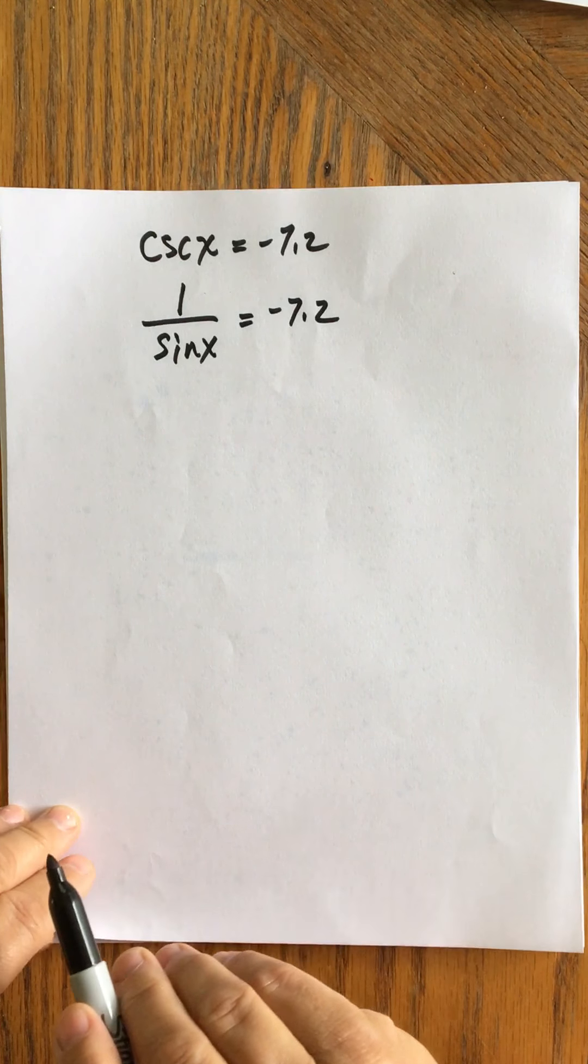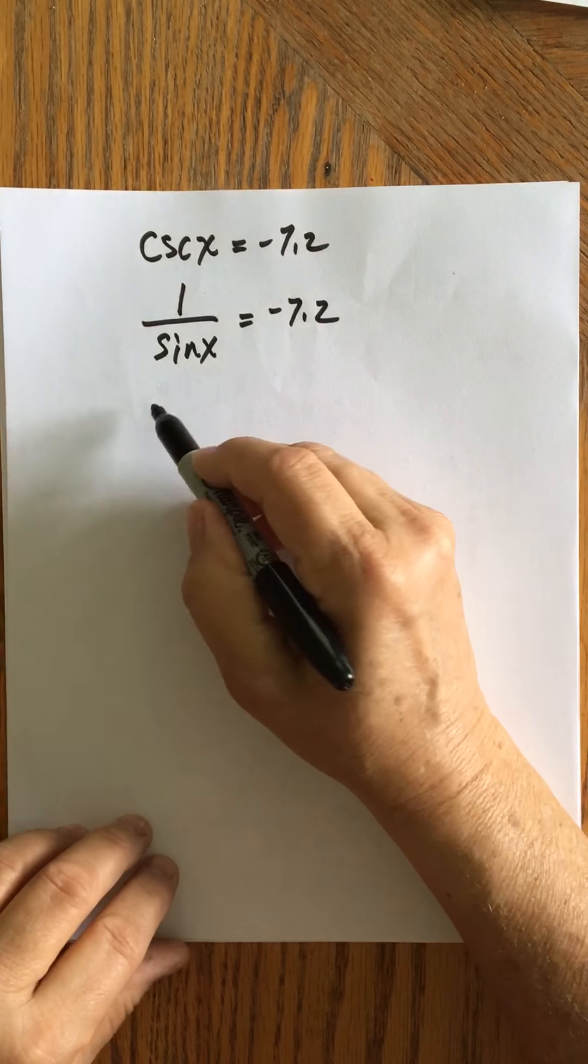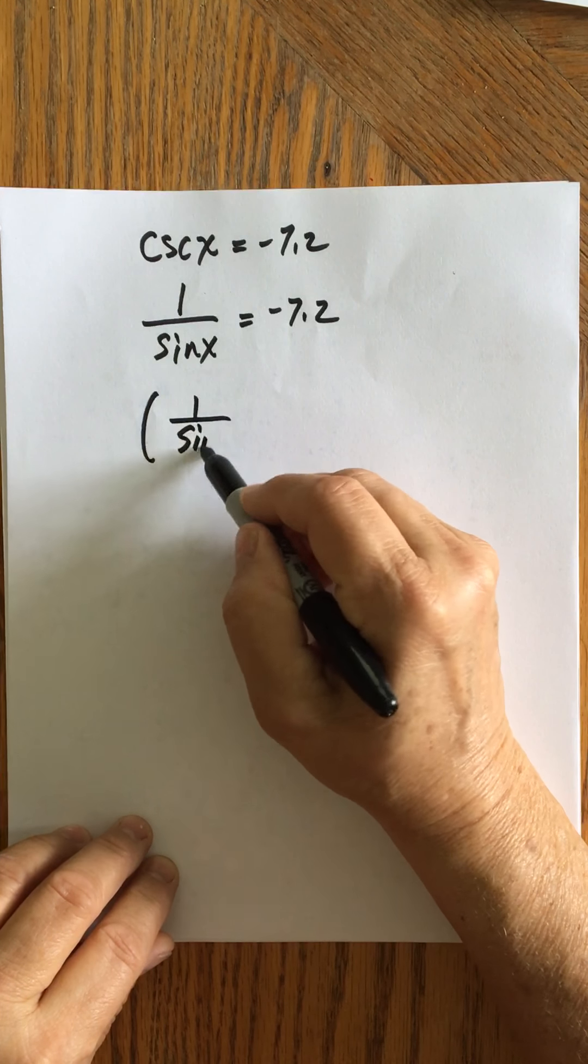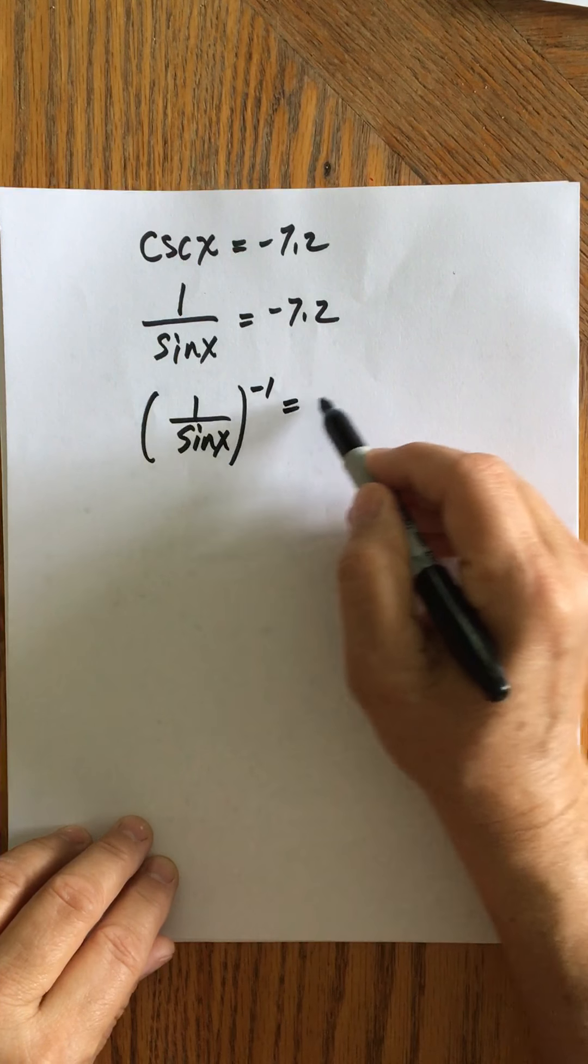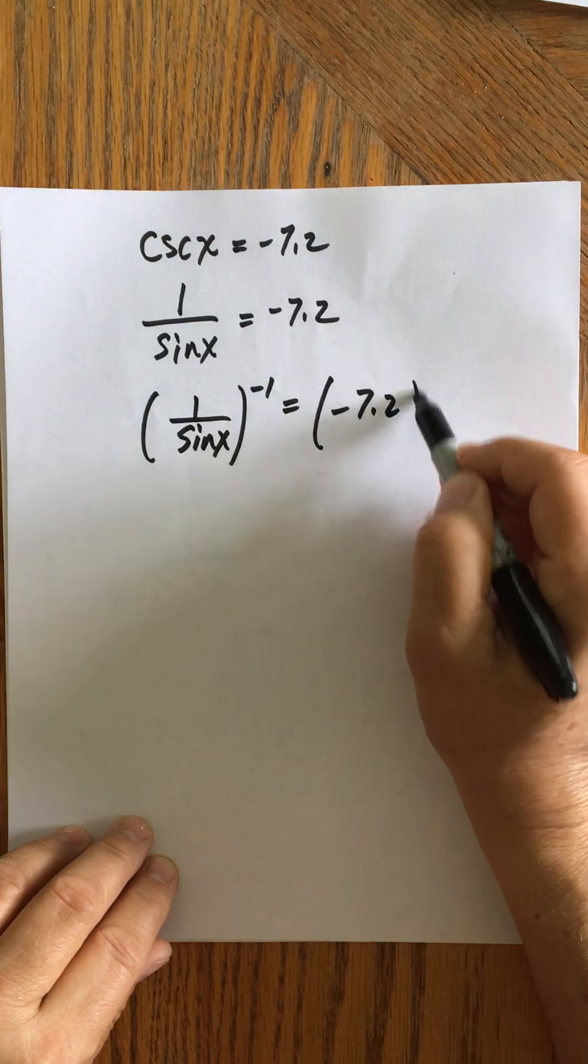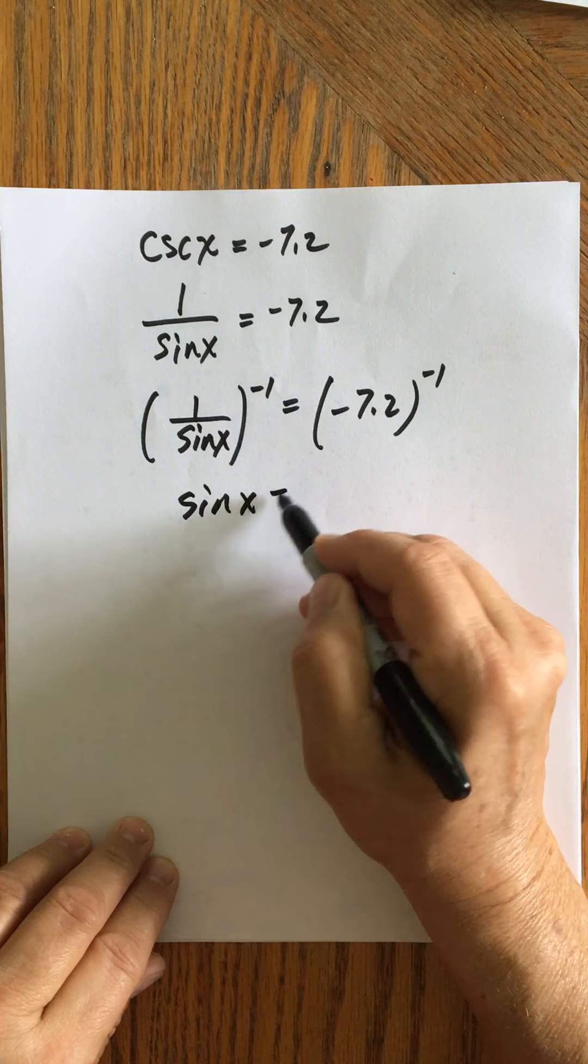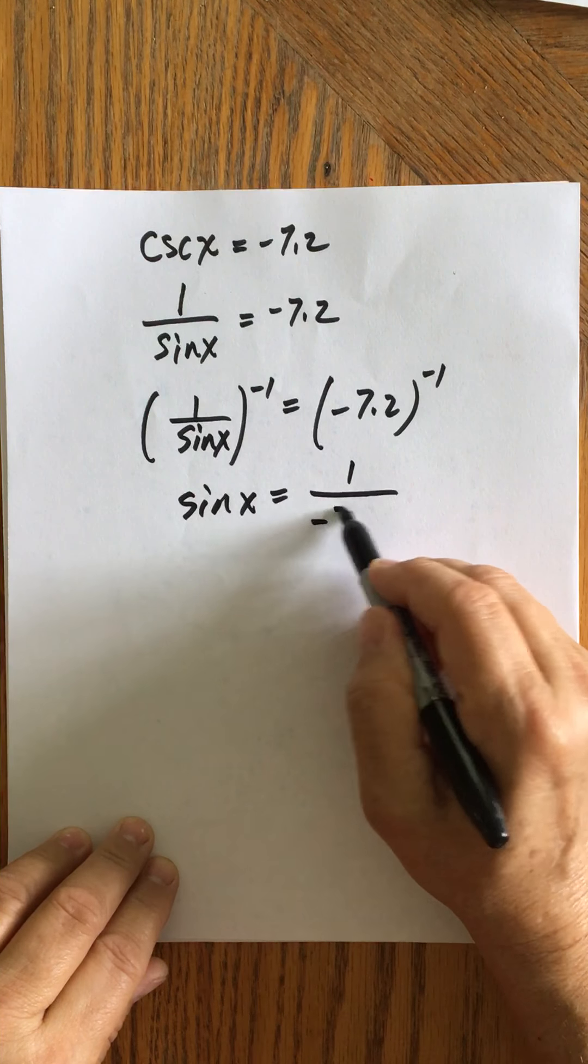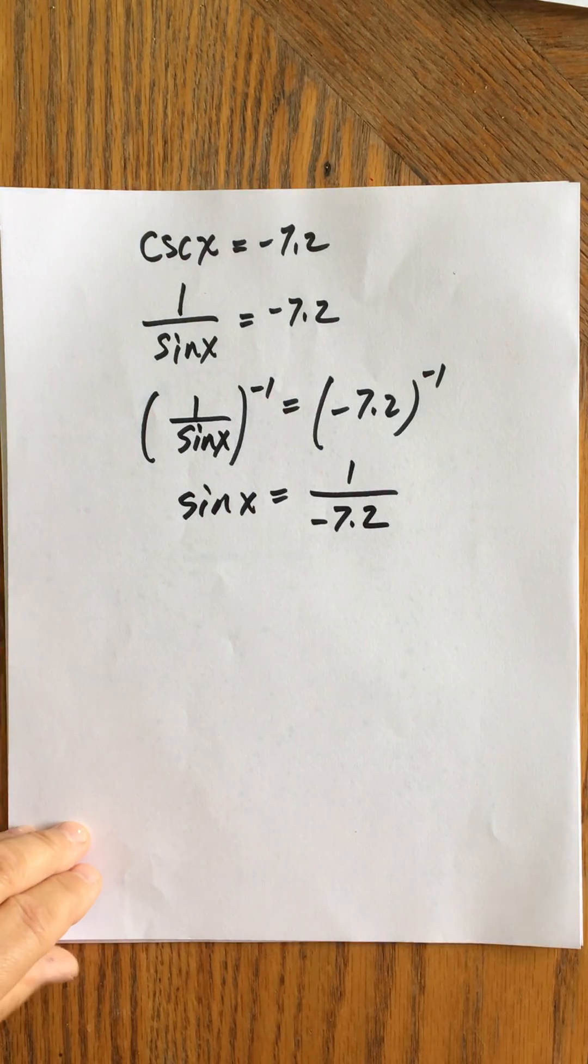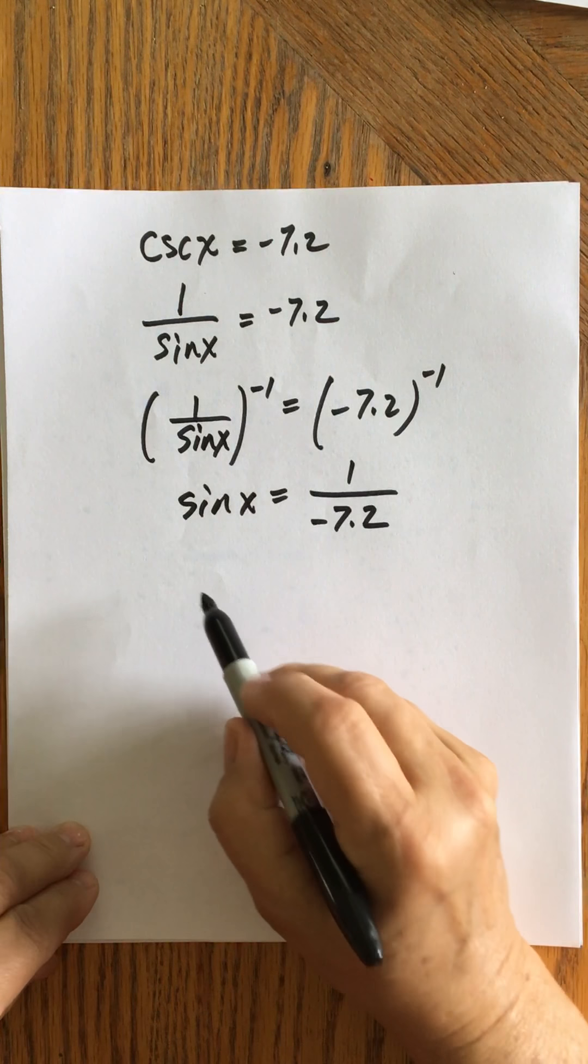Now, my sine function is in the denominator, so I want to bring it to the numerator. So I'm going to take the reciprocal of both sides. So finally, I've got this as something that's a lot easier to deal with. And let me go ahead and approximate this here.